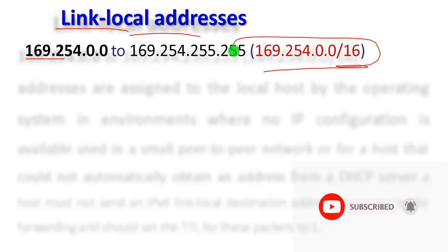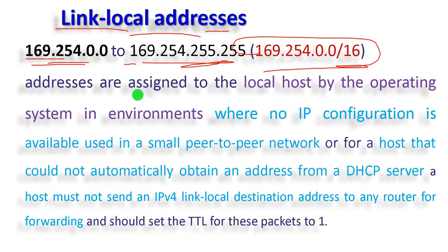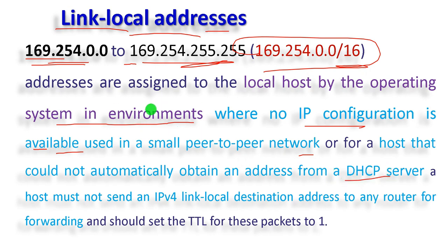The local link address range is 169.254.0.0 to 169.254.255.255. These are assigned to the local host by the operating system in an environment where no IP configuration is available. They are used in small peer-to-peer networks. If Dynamic Host Configuration Protocol (DHCP) is not available and no static IP is configured, the OS automatically assigns a link-local address.